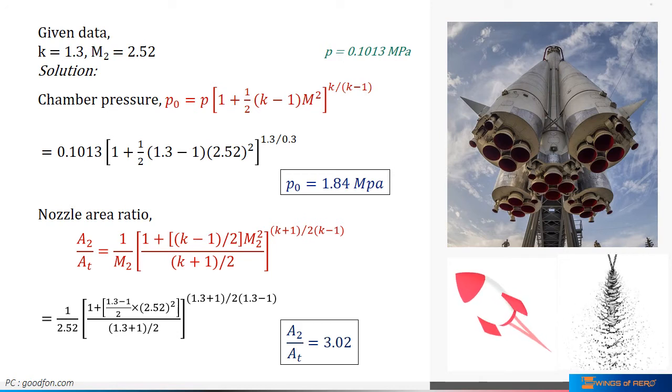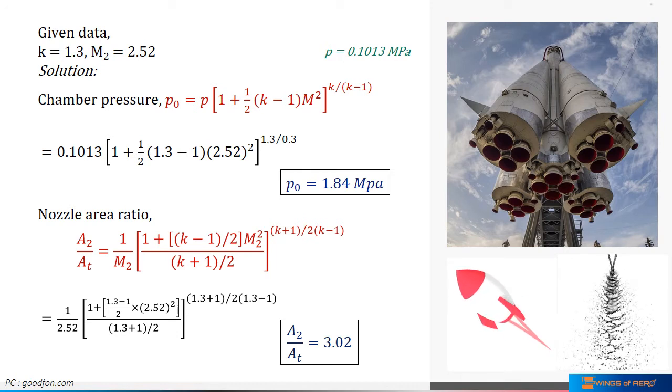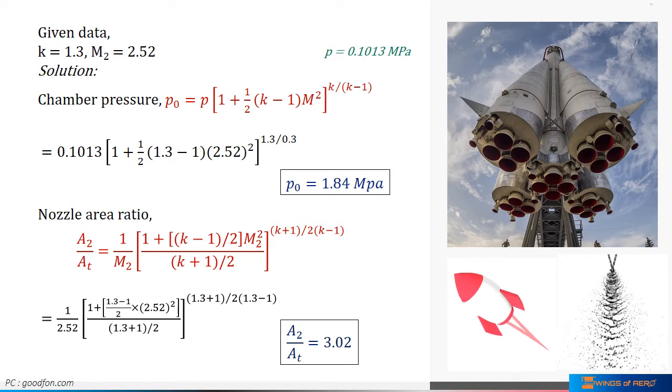Note that, ideal implies no losses. Whereas, optimum is a separate concept reflecting the best calculated performance at a particular set of given pressures. Optimum performance is often taken as the design condition.